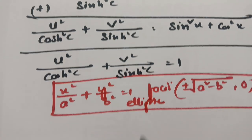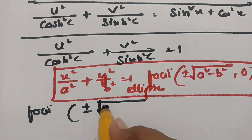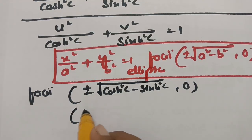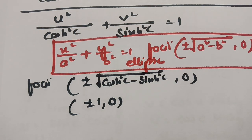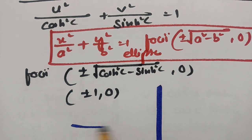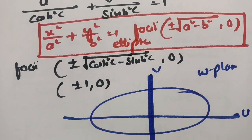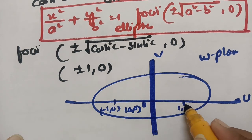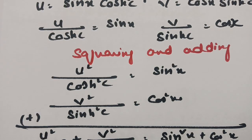For this ellipse, the foci are at (±√(cosh²(c) − sinh²(c)), 0) = (±1, 0). So in the w-plane, we get an ellipse with foci at (±1, 0). If y = c we get an ellipse; if x = c we get a hyperbola.